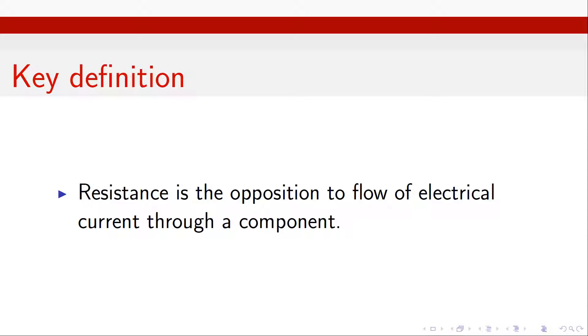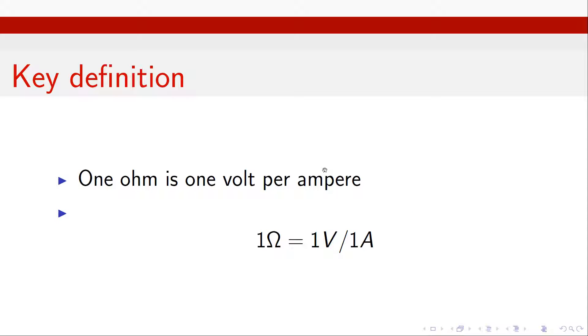So we might expect that in that case we would measure it in terms of maybe how much energy that resistor takes out per coulomb of charge that passes through it, which would give us the same definition as voltage. In fact, if we have a look at the unit, we get something quite different. So resistance is measured in ohms, and one ohm is one volt per ampere. So not quite what we might have expected.